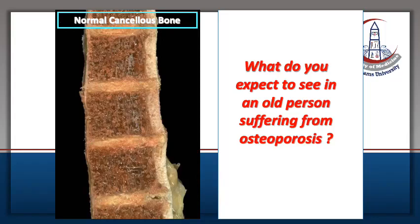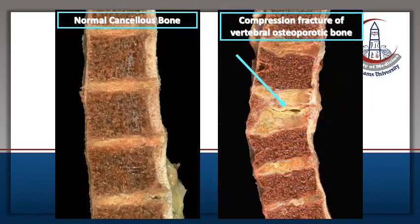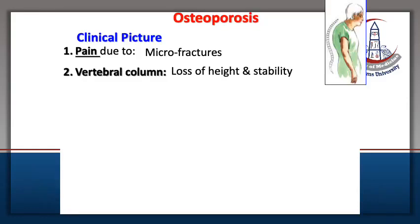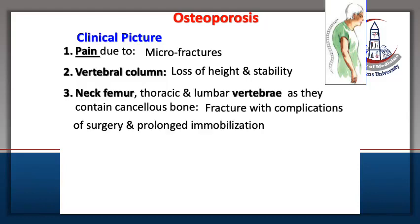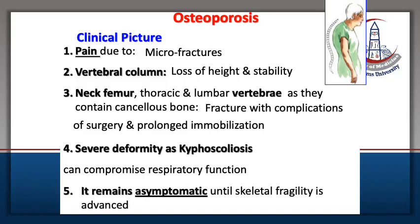In osteoporosis, the vertebral bone shows microfractures and deformities. The clinical features include pain due to microfractures, loss of height in the vertebral column, and fractures of the neck, femur, and vertebrae, with surgical complications. There is severe deformity such as kyphoscoliosis that can sometimes compromise respiratory function. Sometimes it remains asymptomatic until skeletal fragility is advanced.